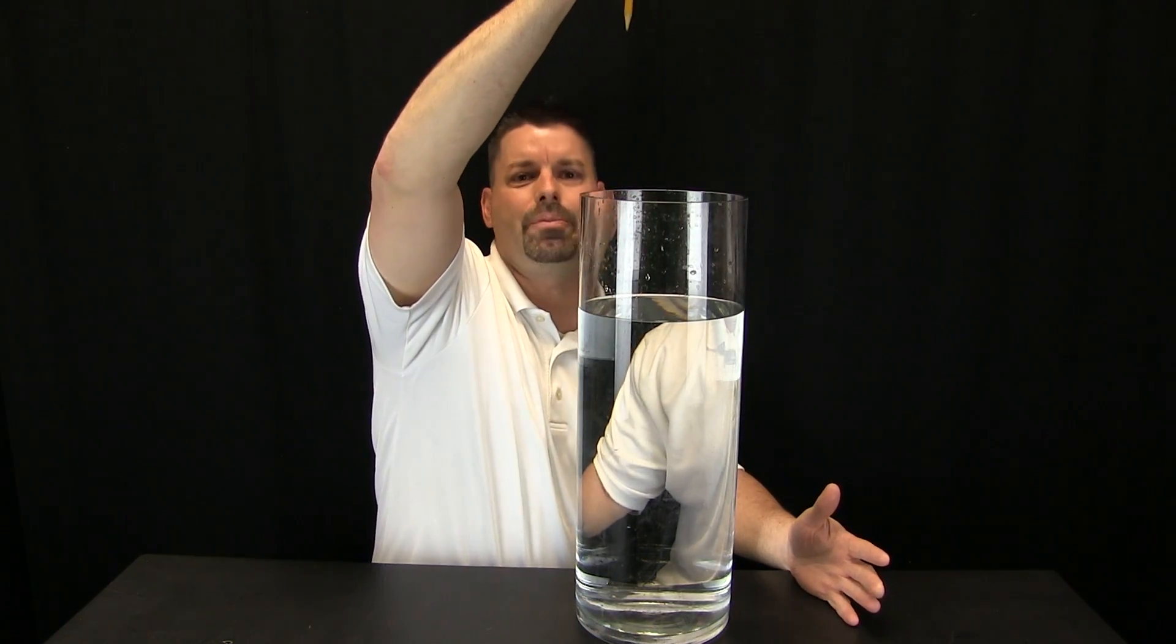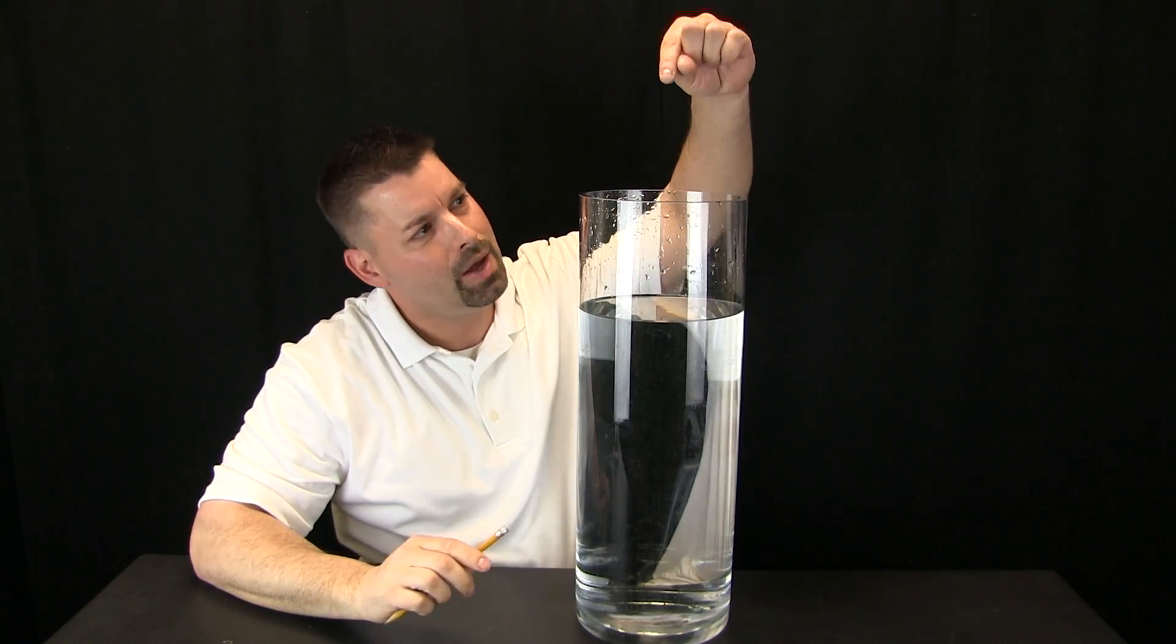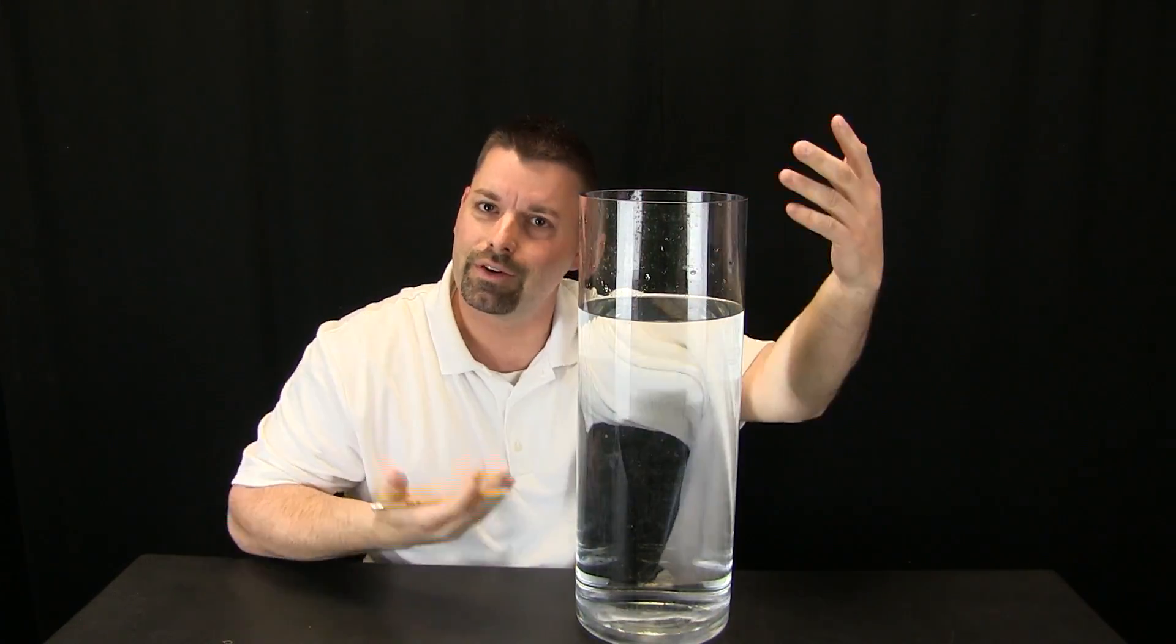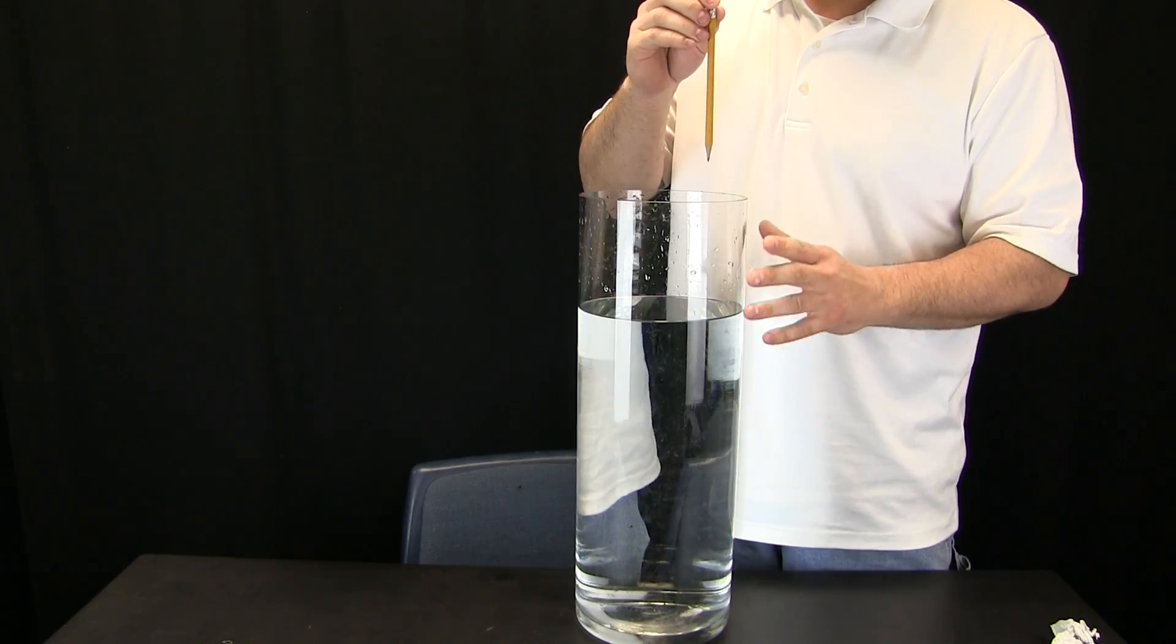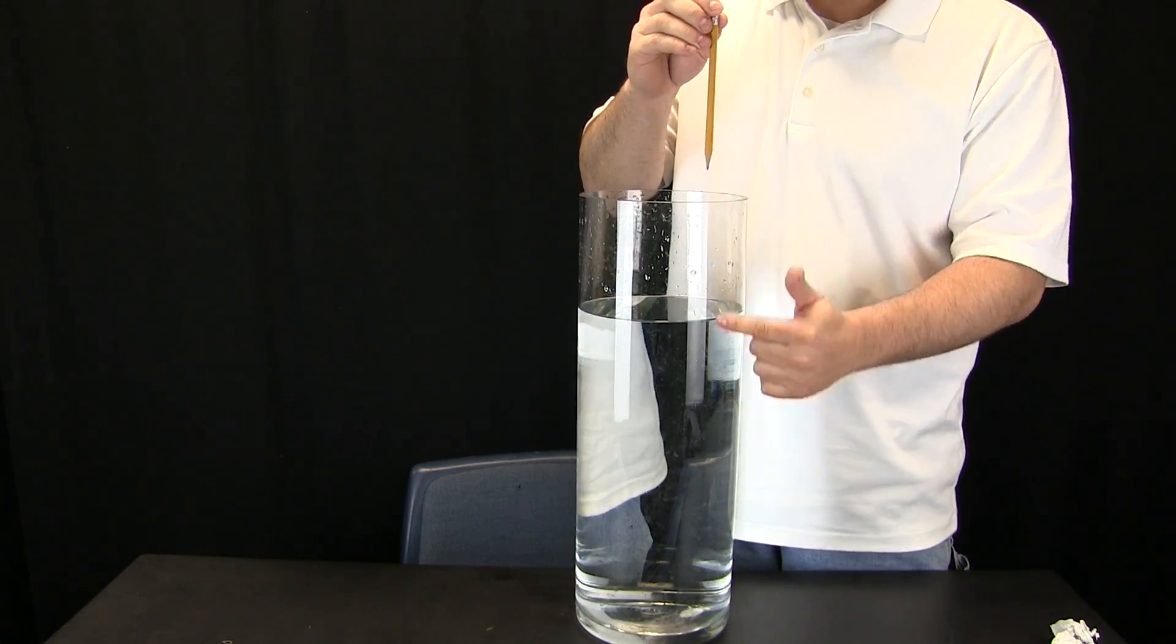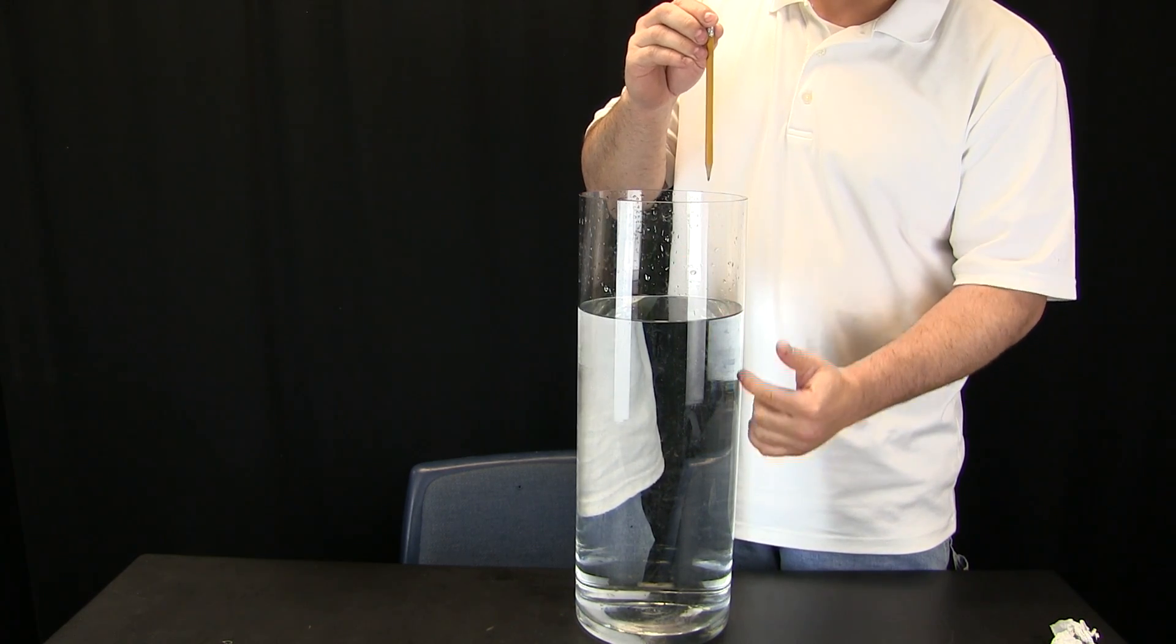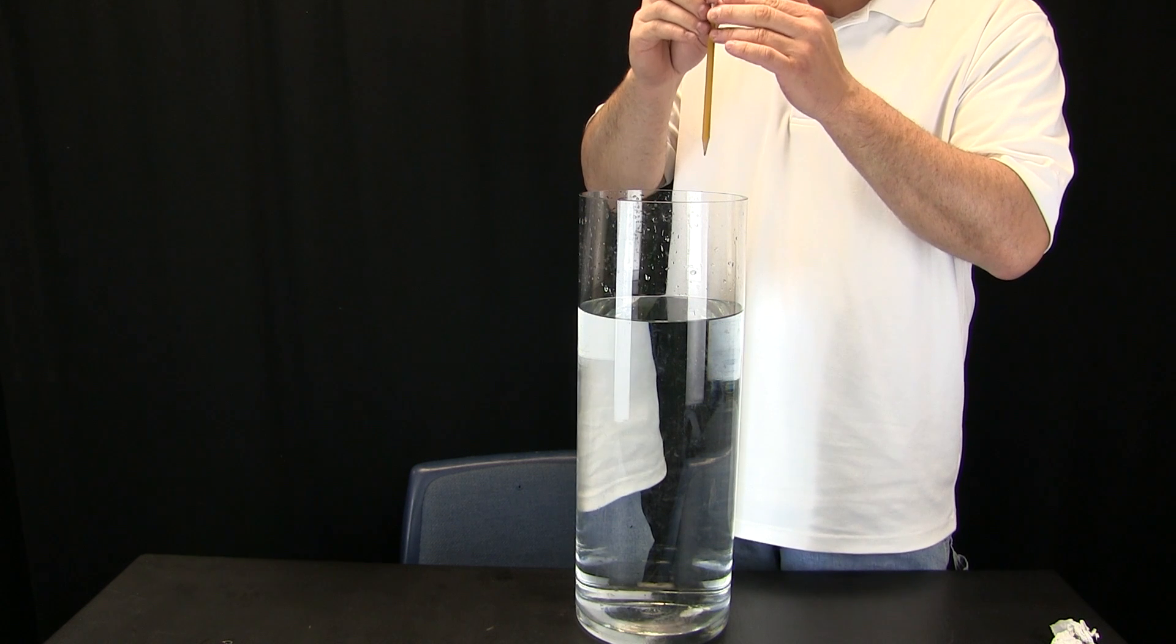We are going to hold it above and drop the pencil and see how the pencil moves through the air, and then how it moves through the water, and see if there is a difference between the two. So I am standing up above our container. I am going to drop the pencil straight. Take a close look at how the pencil travels through the air, and then watch what it does when it hits the water. Here we go.